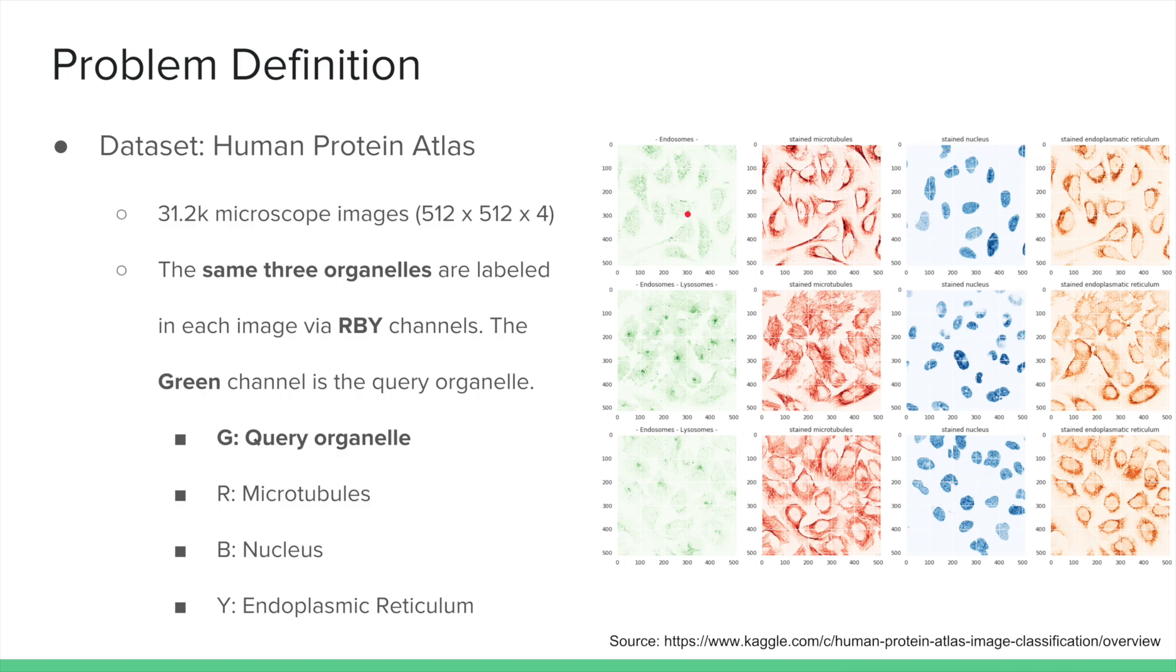Given an input image which has four channels - green, red, blue, and yellow - our task is to assign the correct set of labels to the organelles in the green image.